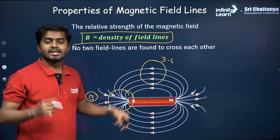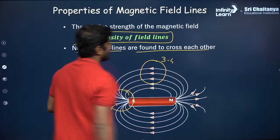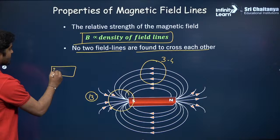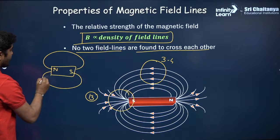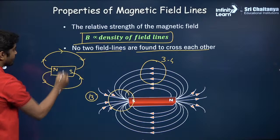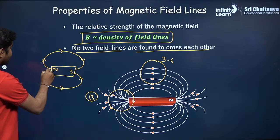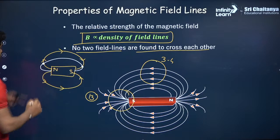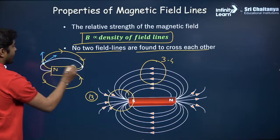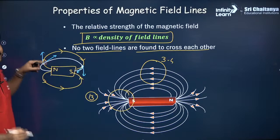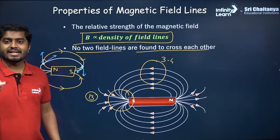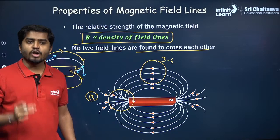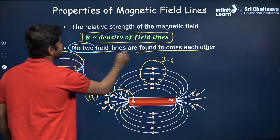No two magnetic field lines cross each other. If two field lines intersected, you could draw two tangents at that point, which would give two directions for the magnetic field at one point — which is impossible. That is the reason no two magnetic field lines can cross each other.